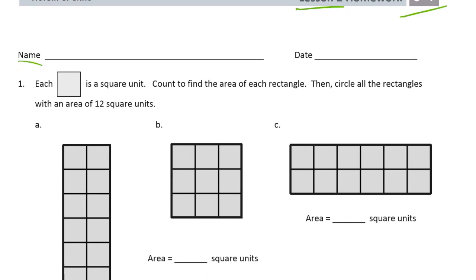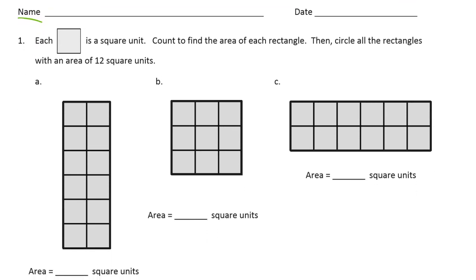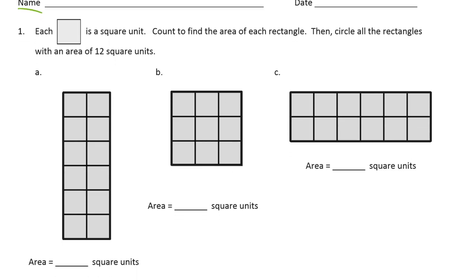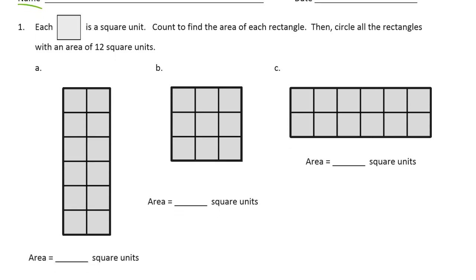We're looking at these problems. Each square is a square unit. Count to find the area of each rectangle, then circle all the rectangles with an area of 12 square units.